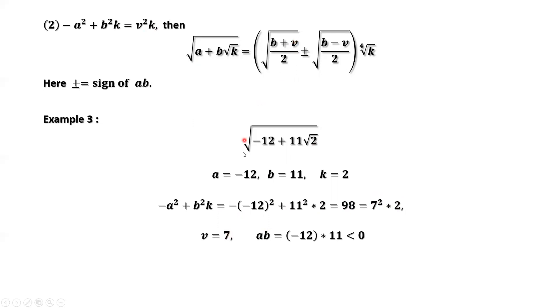So from this structure we can see v equals 7. v equals 7, b equals 11. We only need to determine the sign here. A times B is negative, so we pick minus. We have everything to derive the final answer now.